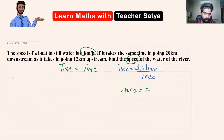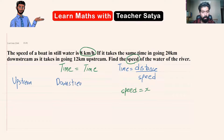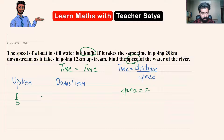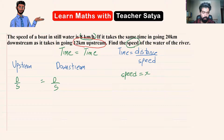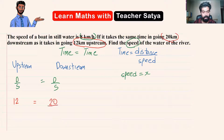We have two sides to this equation: one is going upstream and the other is going downstream. Time equals distance over speed, so d over s equals d over s, with the left side for upstream and the right side for downstream. The distance going upstream is 12 kilometers and the distance going downstream is 20 kilometers.